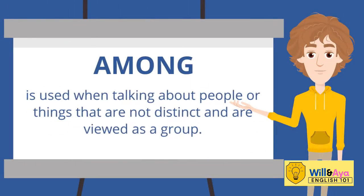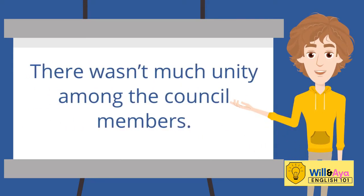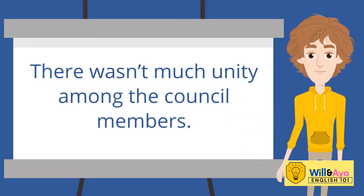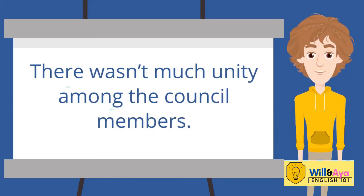Now, 'among' — A-M-O-N-G — is used when talking about people or things that are not distinct and are viewed as a group. For example: there wasn't much unity among the council members. Here, 'the council members' pertains to a group, thus it is not separate or distinct. So in this case, we should use 'among'.